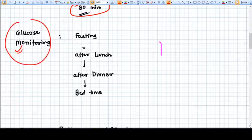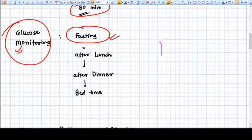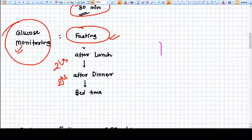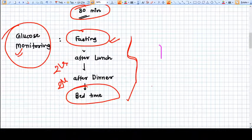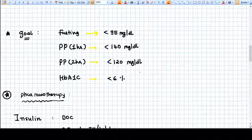Now the very important aspect of managing DM or GDM during pregnancy is strict glucose monitoring. We do this by measuring glucose levels at least four times: fasting, two hours after dinner, two hours after lunch, and at bedtime. These are the minimum criteria.